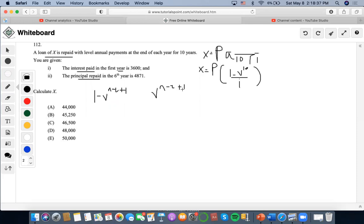Now they're saying that the principal repaid in the first year is 3600. So I'm going to denote this, the interest paid, as 1 minus v to the 10 minus 1 plus 1, and I'm going to get v to the 10 which equals to 3600.